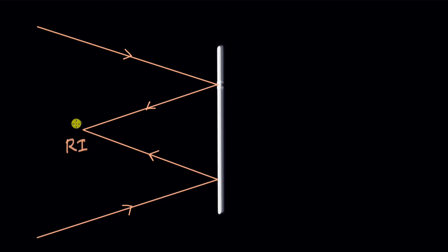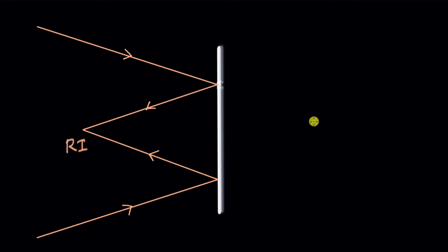But where is the object of this real image? It turns out if we extend these light rays, the point where the rays would have converged acts as a virtual object, and we say that the mirror forms a real image of the virtual object.